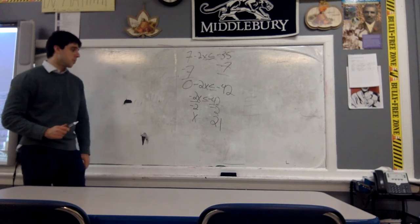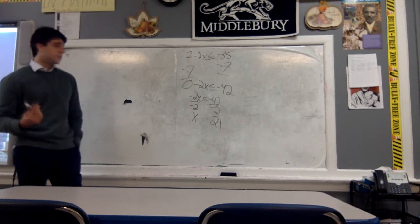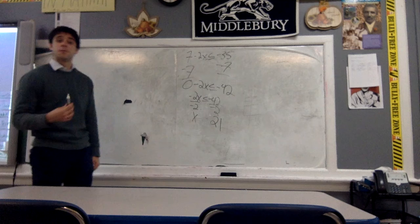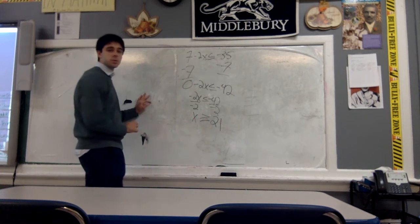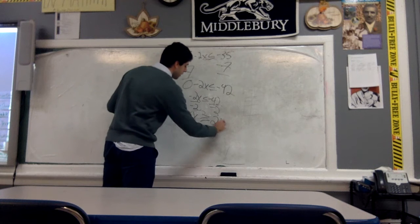So we have x and 21, and we've just divided both sides by negative 2. So that means we have to flip our inequality symbol to be x is greater than or equal to 21. And that is going to be our final answer.